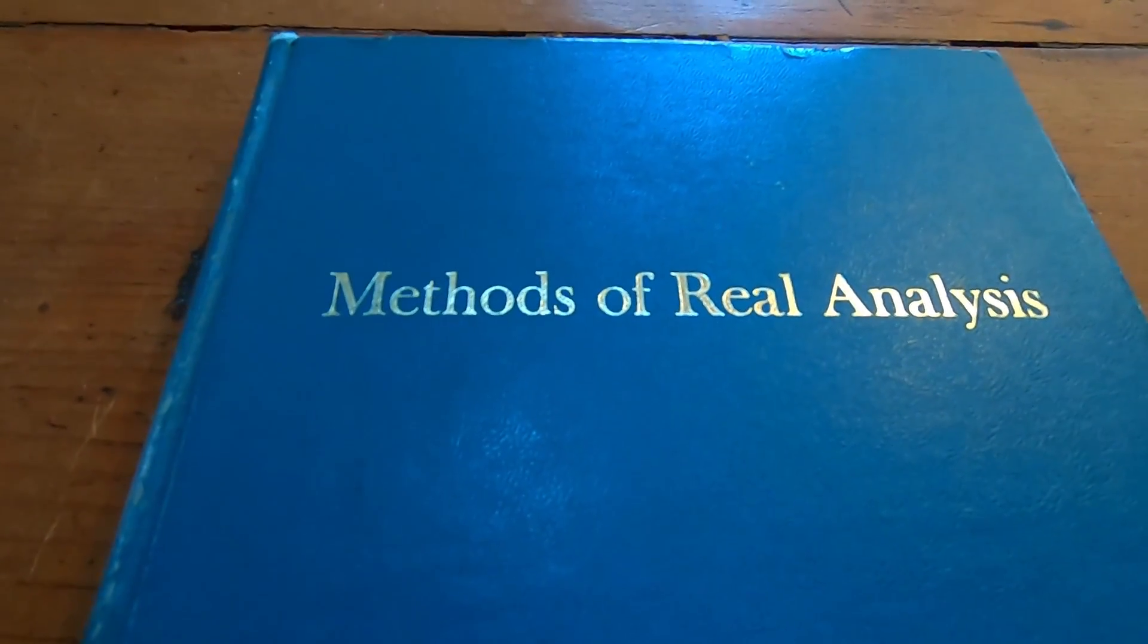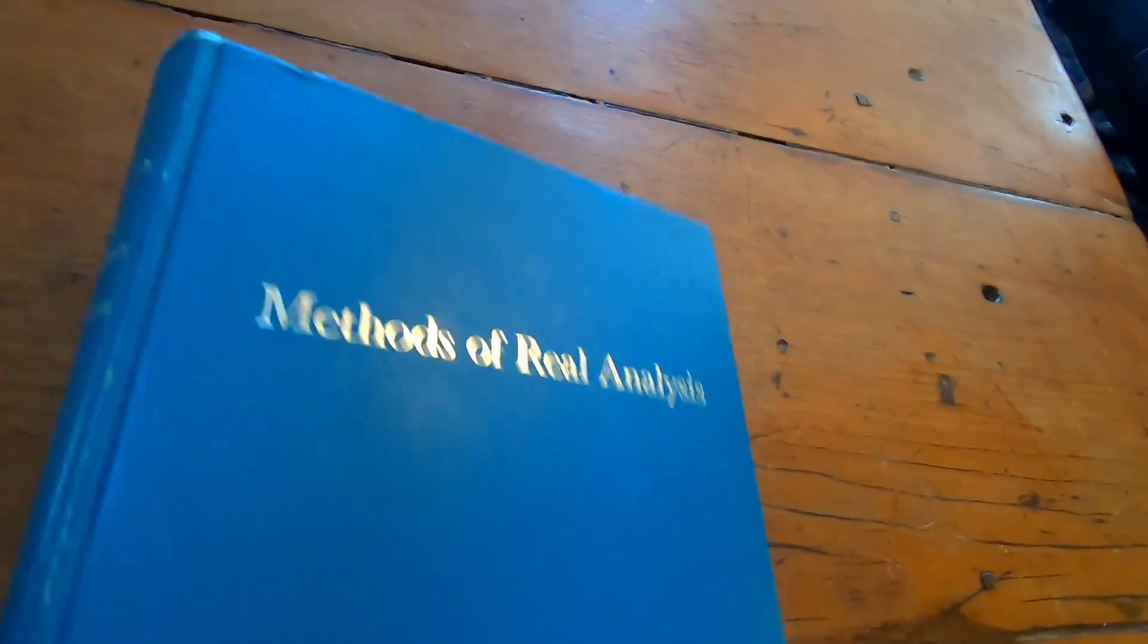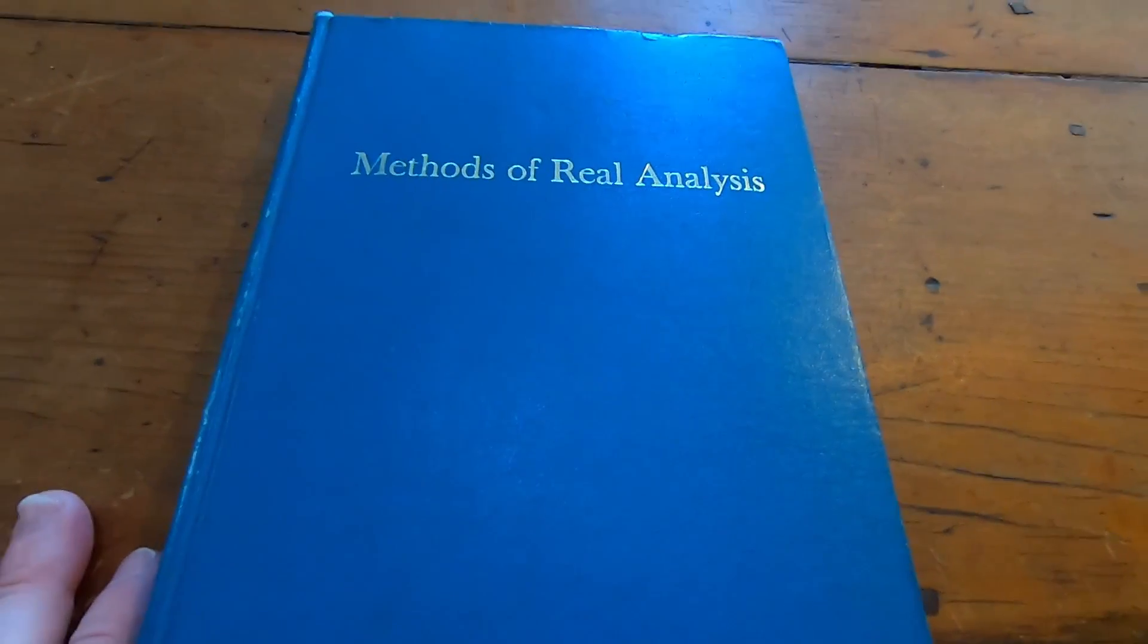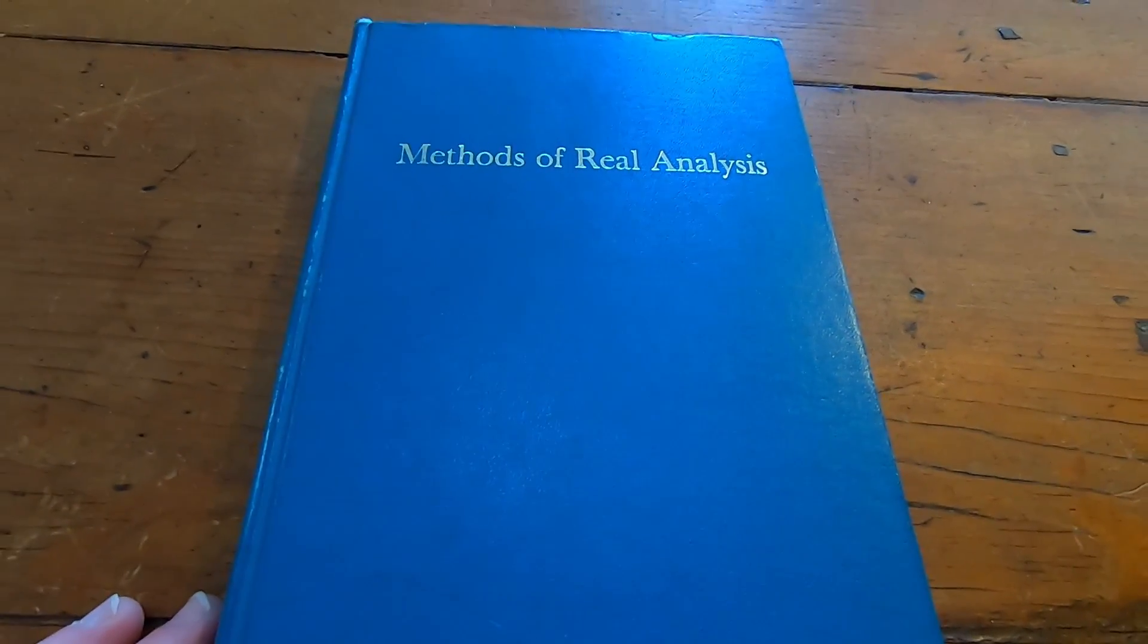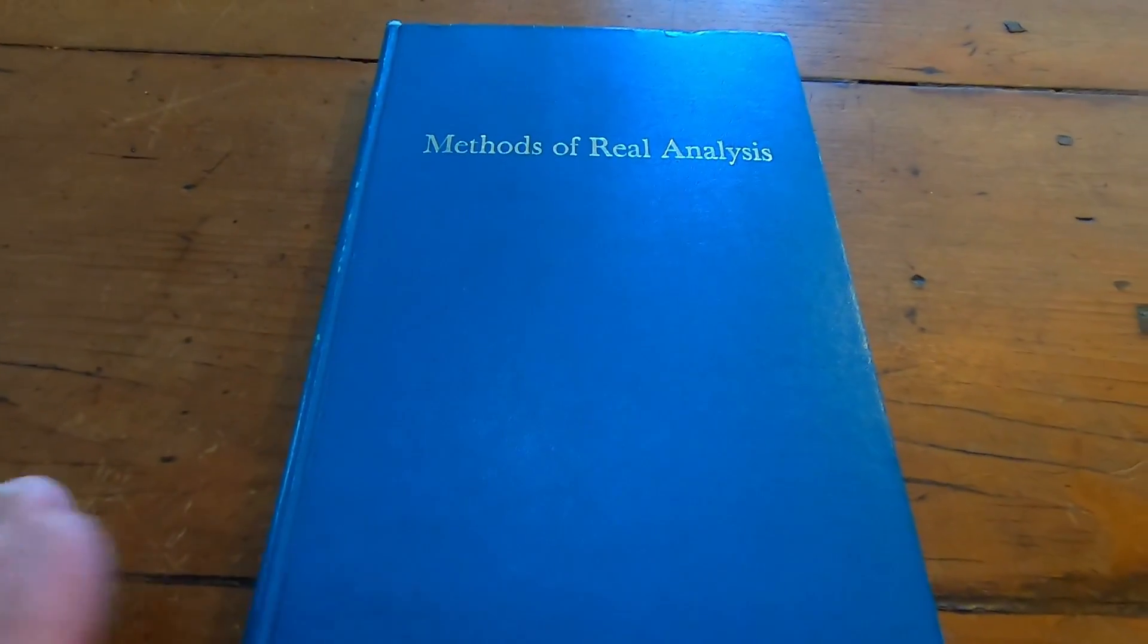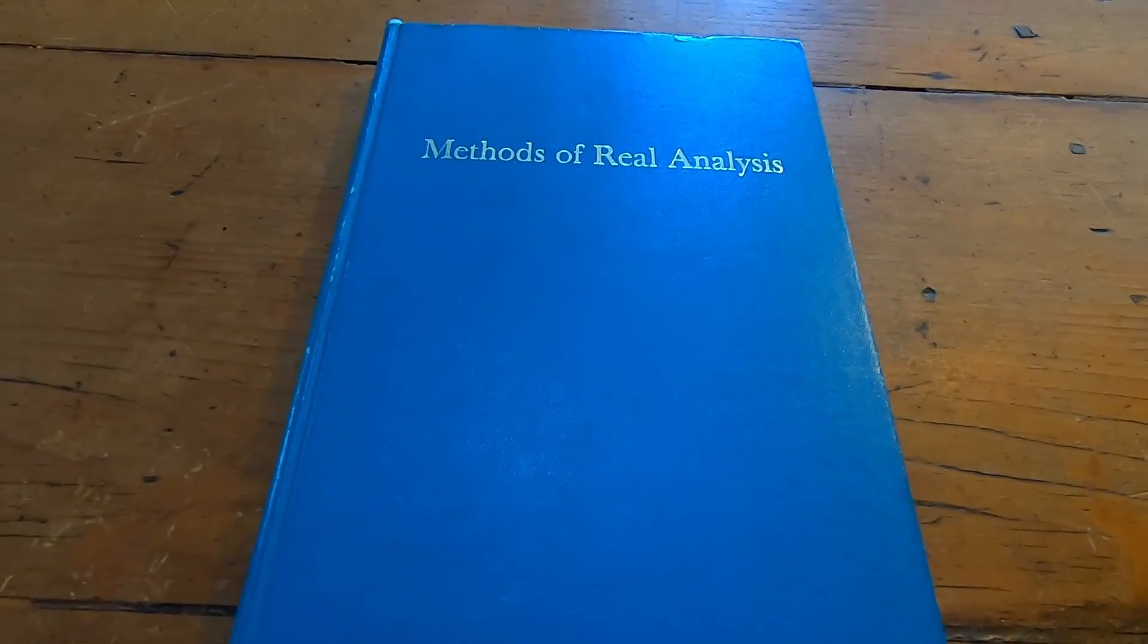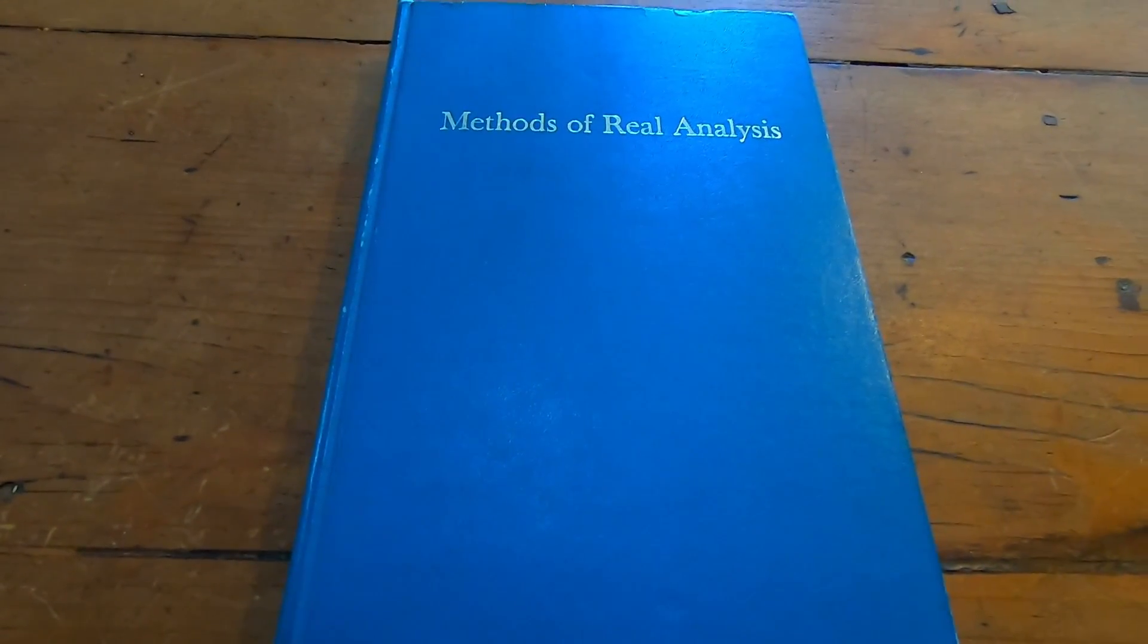So again, the book is Methods of Real Analysis. And the author is Goldberg. This is a book that was written in the 60s. And it's a good book. It's rigorous. However, it does have some typos. And it lacks solutions to the exercises. I wouldn't say it's a beginner book. I would say it's kind of intermediate slash advanced. But worth owning, even if just for the price alone, because you can get it really, really inexpensively. Good luck.